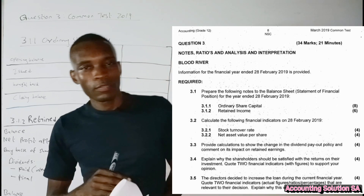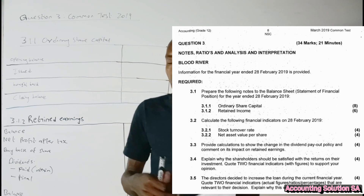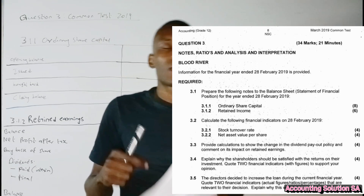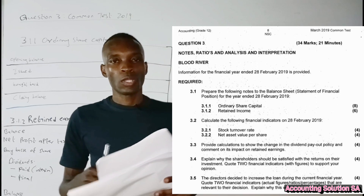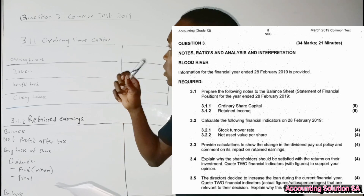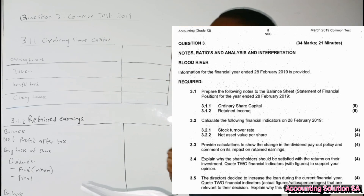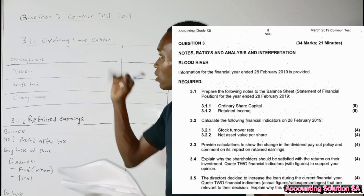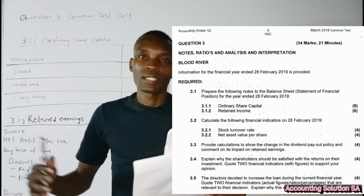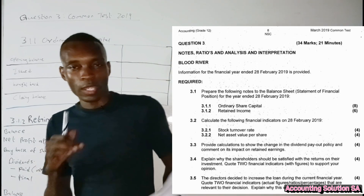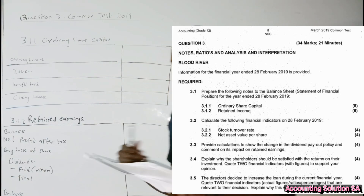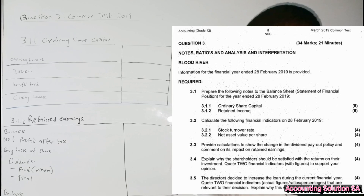In this video we are going to do only a two-note contribution of the question paper, starting from question one up to the last one. This is a common test that was written in 2019, question three. We're going to prepare the ordinary share capital and retained income note. Please make sure that you watch until we finish everything so that you can gain more knowledge and principle under this video.